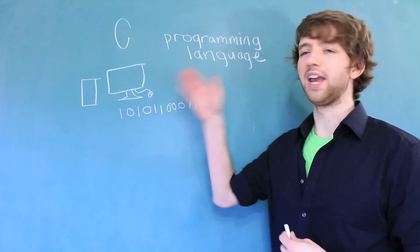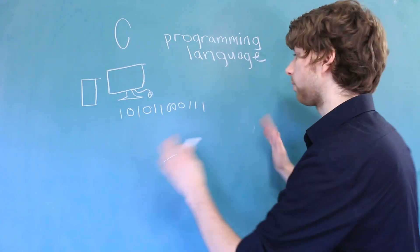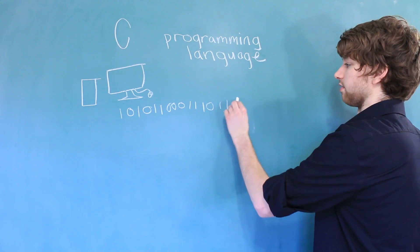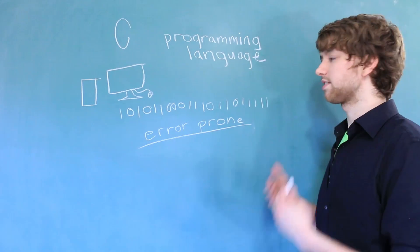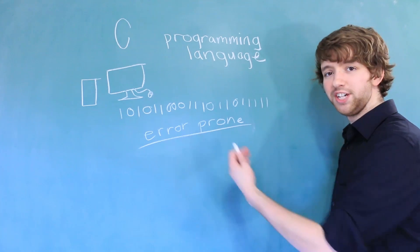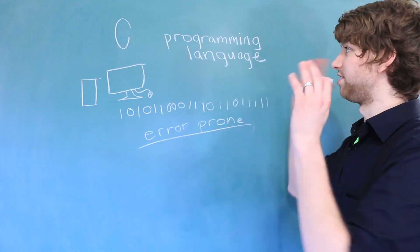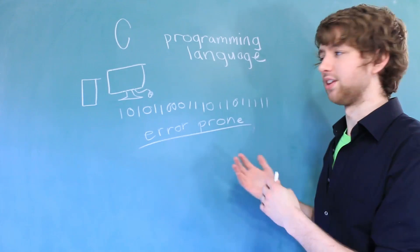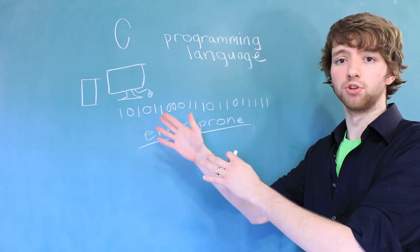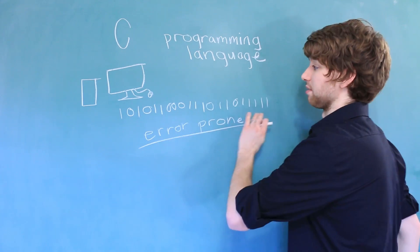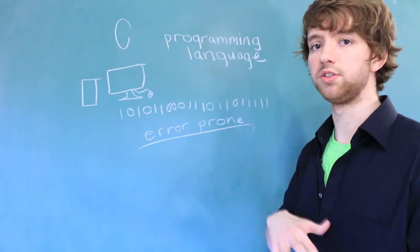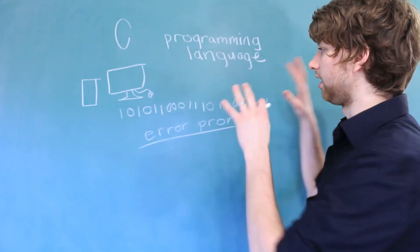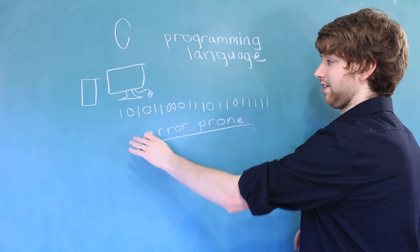We could communicate to a computer using machine code, but we're going to have long, huge sequences of ones and zeros, and it's going to be very error prone. Because it's so complicated writing in machine code, smart people invented programming languages that allow us to communicate to the computer without having to type something like this. A programming language is readable to a human once you learn that language, and it's not nearly as complex as something like this.